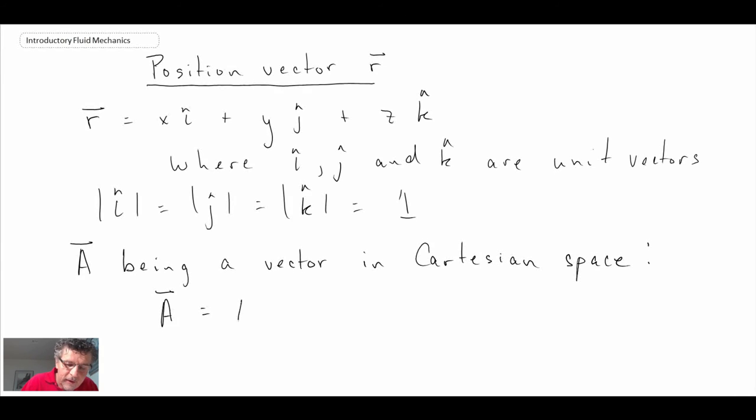A is going to have a scalar value in the i direction plus a scalar value in the j direction plus a scalar value in the k direction. Just to make it interesting, we'll introduce vector B because that will enable us to operate between A and B, and B would be defined in the following way.